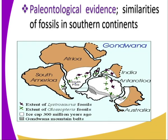Then we also have the paleontological evidence — the similarities of the fossils in the southern continents: South America, Africa, India, and Australia. These fossils indicate that these continents were initially one, as you can see how they are distributed in a certain area.